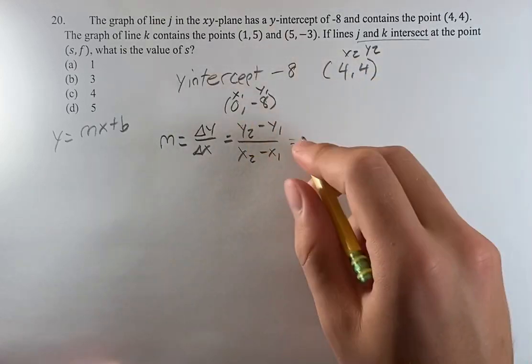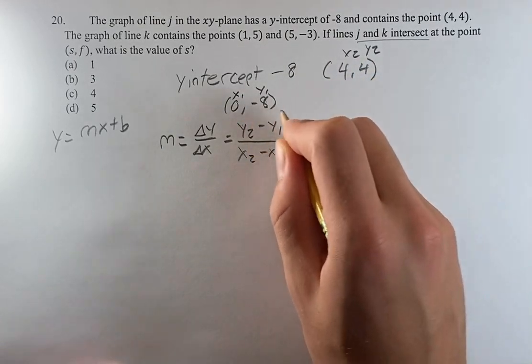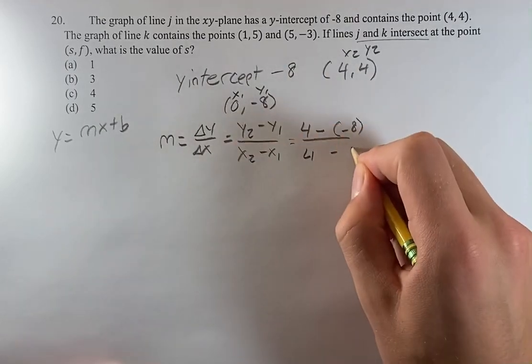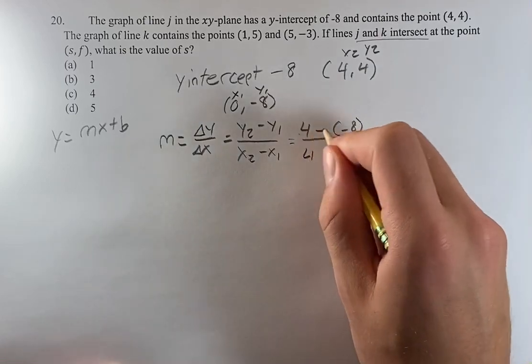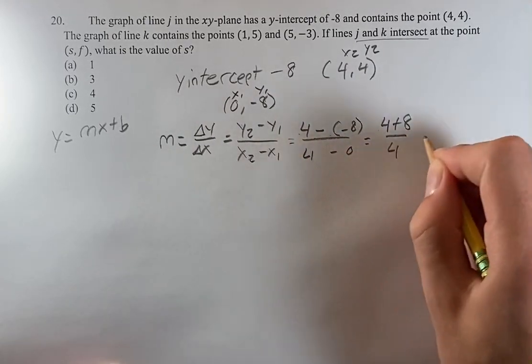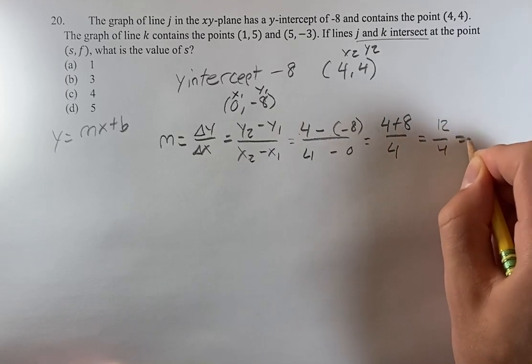Just plugging in, 4 minus negative 8 over 4 minus 0. This is, of course, equal to 4 plus 8, negatives cancel, over 4. It's equal to 12 over 4 equals 3.